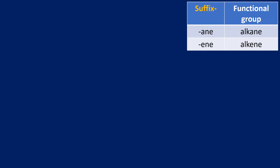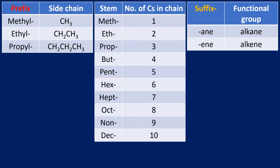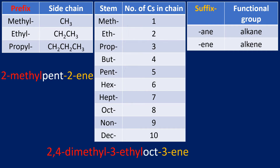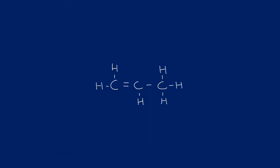When we name substances, as you've seen in previous videos, we have something called a suffix, a stem, and a prefix. For example, we've got 2-methylpent-2-ene: the 2-methyl is a prefix, the pent is the stem telling us the number of carbons in the chain, and the suffix in this case is -ene because of the alkene functional group. The suffix tells us the functional group. We'll also look at two more names later and draw them from their names.